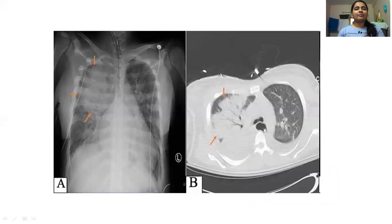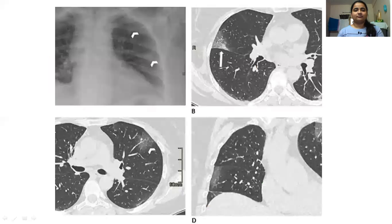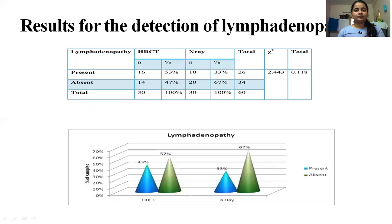This slide shows upper lobe consolidation on the right side. For ground glass opacities, only 33% were identified on X-ray while 43% could be identified on HRCT. For lymphadenopathy, only 33% were identified on X-ray while 53% could be identified on HRCT.